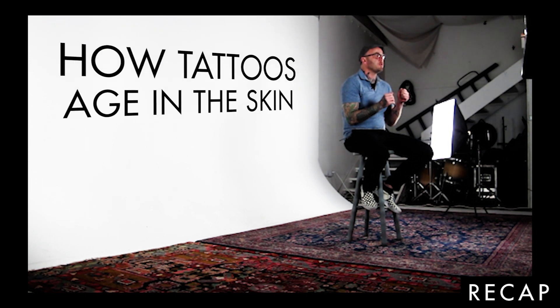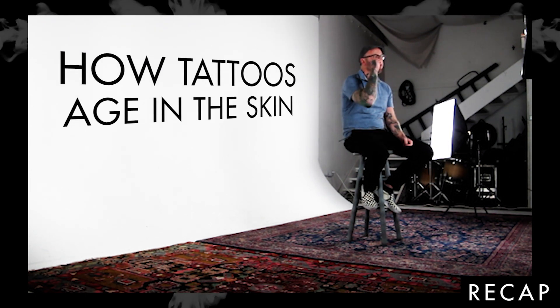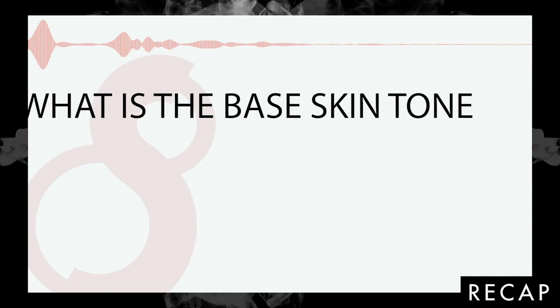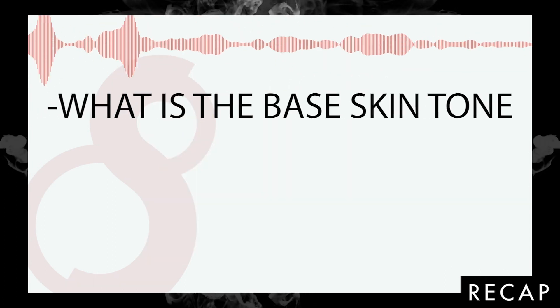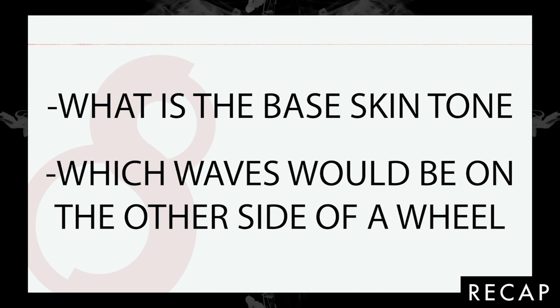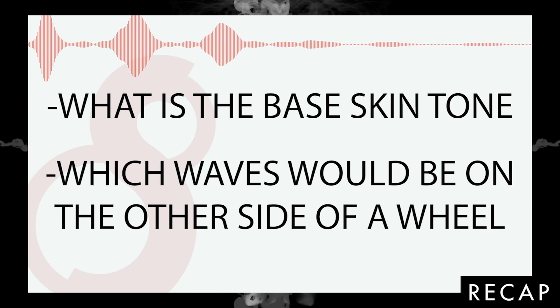This is Tattoo Overview, and last time we talked a little bit about how tattoos age in the skin. Let's take the path of a photon of light and follow it as it travels through the skin, hits the particle of ink, and then travels back to our eyes. What is the base skin tone of this person, and what wavelengths of light would be on the other side of the color wheel?